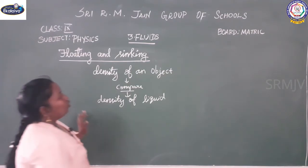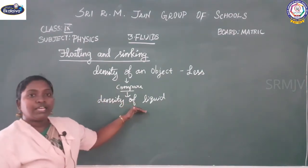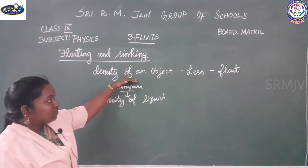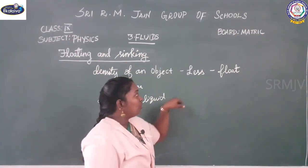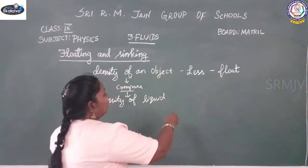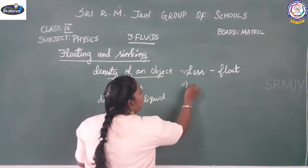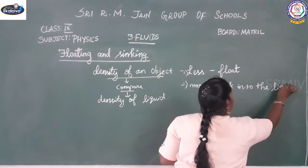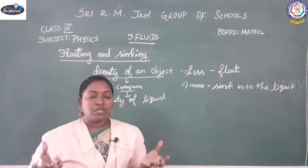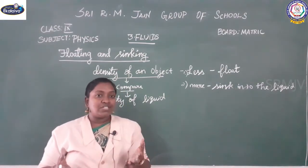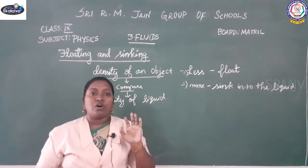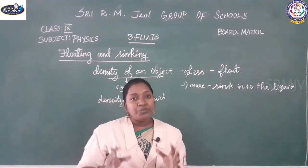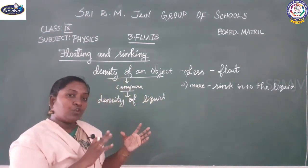When the density of an object is less than the density of the liquid, it will float on the surface of the water. When the density of an object is greater than the density of the liquid, it will sink into the liquid. For example, wood floats on water because its density is less than water. A stone sinks because its density is more than the density of water.